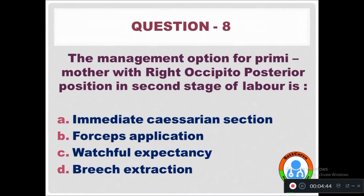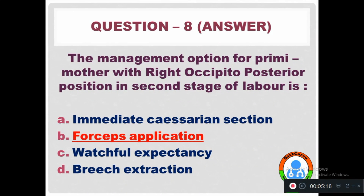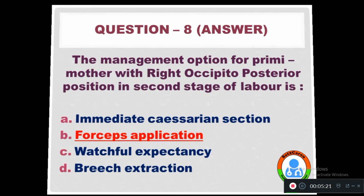Question 8: The management option for a primae mother with right occipito-posterior position in the second stage of labor is — Option A: Immediate scissor. Option B: Forceps application. Option C: Watchful expectancy. Option D: Breech extraction. The right answer is Option B, forceps application.